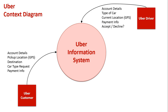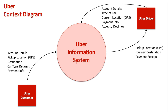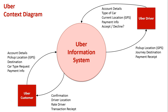Once the Uber customer has entered all their data, the driver needs to respond. The driver receives the pickup location and journey destination, then accepts or declines the job. If they accept, payment takes place immediately — the customer's card is processed, they are given a fee, and payment is commenced before the journey. This is an area where Uber excels: it's one fixed rate, so the customer knows the amount upfront, unlike a traditional taxi.